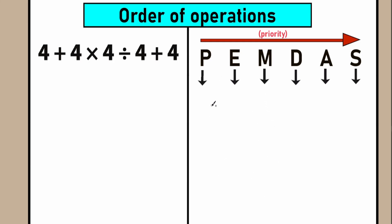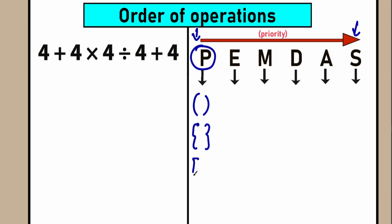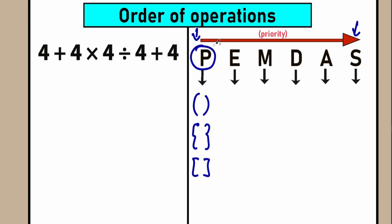PEMDAS is like a quick checklist. Elements on the left side have higher priority than those on the right. The first letter P stands for parentheses — so we need to find parentheses first, maybe squiggly brackets or other types of brackets. Let's scan our question for parentheses. We don't have parentheses, so we can easily skip this part.